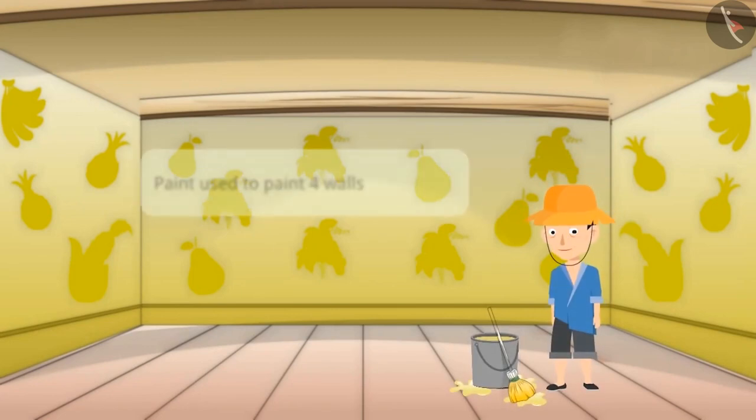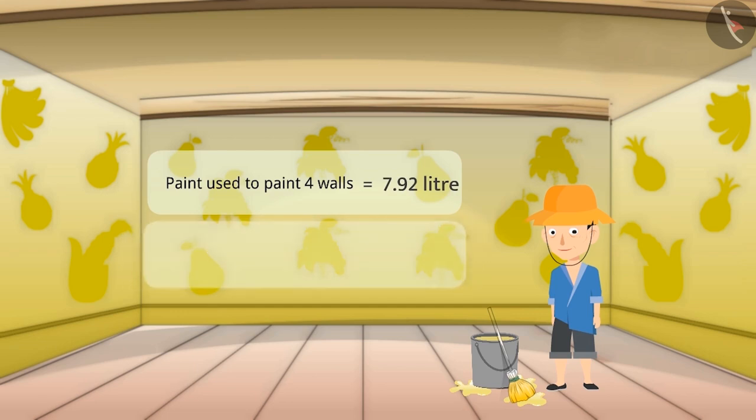Manish painted the walls of his house. He required 7.92 litres of paint to paint 4 identical walls. If he used an equal amount of paint for all the walls, then find the amount of paint he used for each wall.